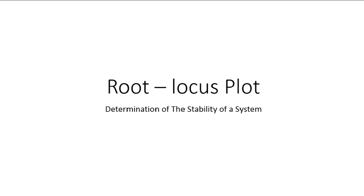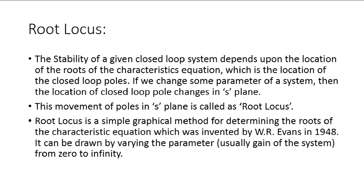Root-locus plot — determination of the stability of a system. The stability of a given closed-loop system depends upon the location of the roots of the characteristic equation, which is the location of the closed-loop poles. If we change some parameter of a system, the location of the closed-loop poles in the S-plane also changes. This movement or traversal of the poles in the S-plane is called the Root-locus. Root-locus is a simple graphical method for determining the roots of a characteristic equation, invented by W.R. Evans in 1948.